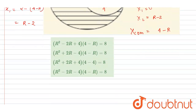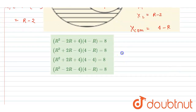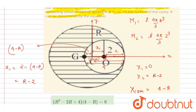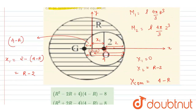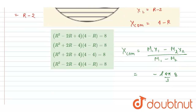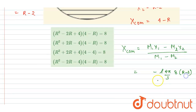Now just apply the formula. The center of mass coordinate equals (m1·x1 minus m2·x2) divided by (m1 minus m2), because the cavity mass is removed. Here x1 is 0, m2 is rho·(4π/3)·8, and the x-coordinate of m2 is r minus 2.